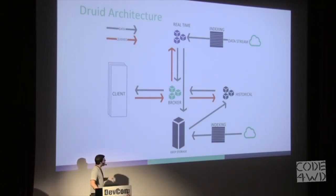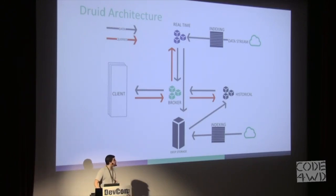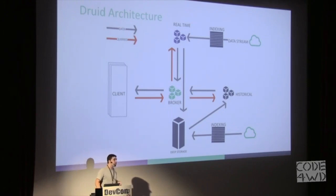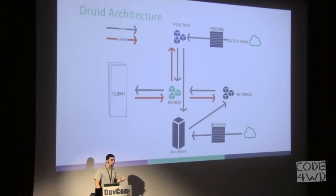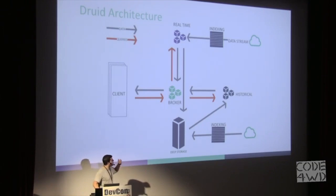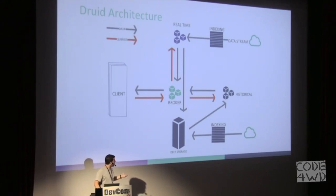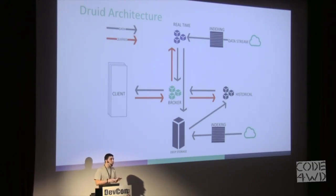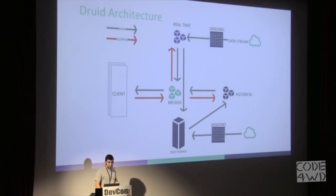In addition, Druid supports real-time ingestion through a real-time node that can read events directly from an event source like Kafka, index the data in real-time, and make it queryable immediately. When a query reaches the broker, the broker knows how to distribute the job between the real-time nodes and the historical nodes.